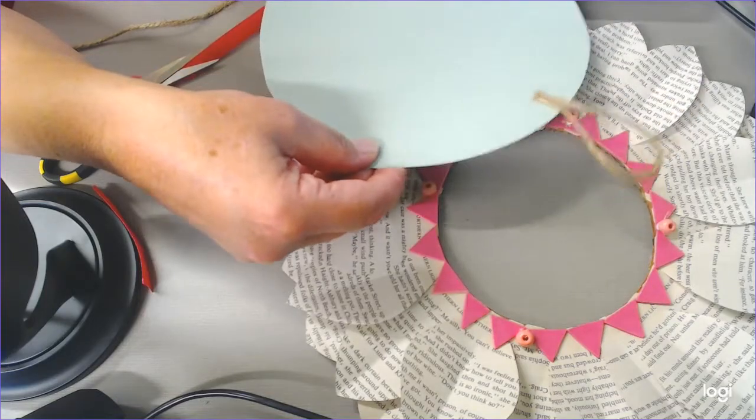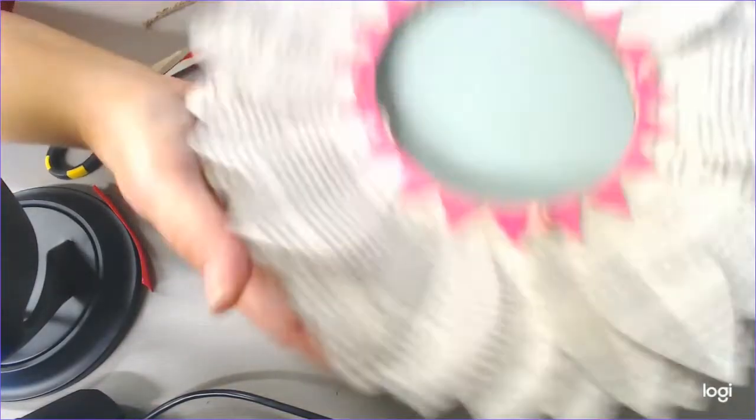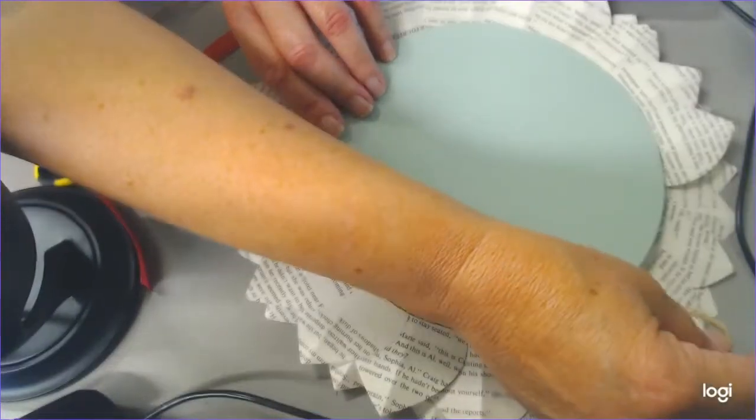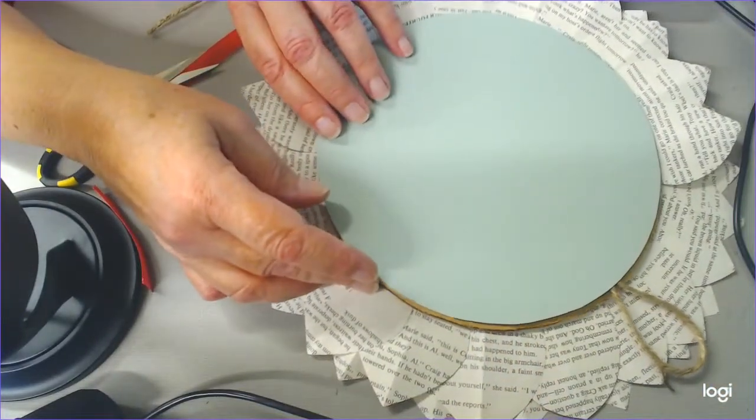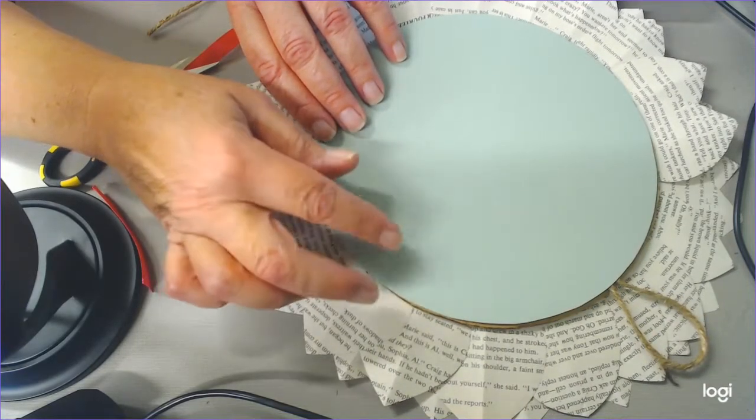You'll have a loop so that you can hang your wreath wherever you want to. So it would go on the back like that and then you can hang it. Just make sure you put it on the inside before you glue it down.